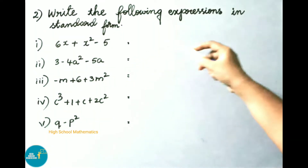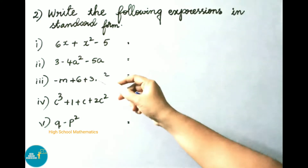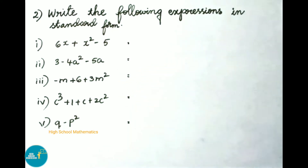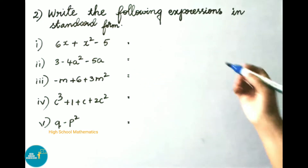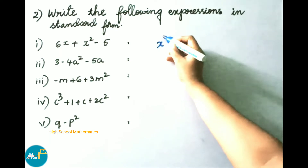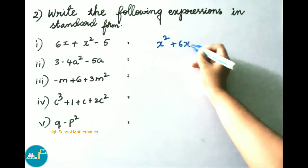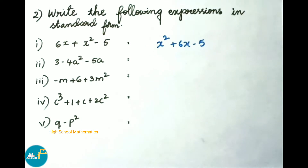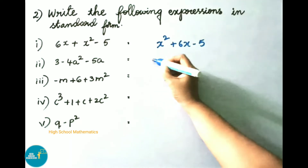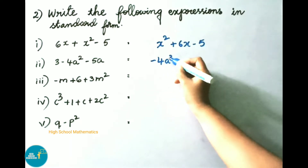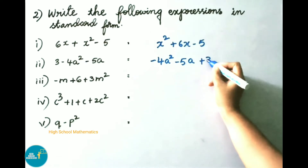See now question number 2: write the following expressions in standard form. The first expression is 6x plus x square minus 5. To write any expression in standard form we have to write exponents of the variables in descending order, so the standard form is x square plus 6x minus 5. The second one is 3 minus 4a square minus 5a; in standard form it is minus 4a square minus 5a plus 3.